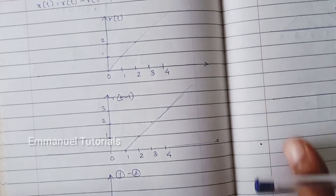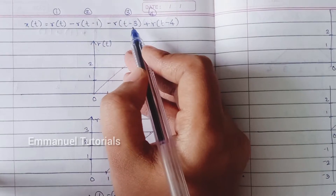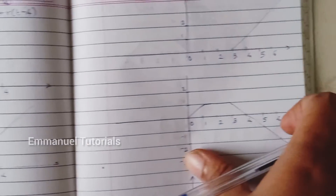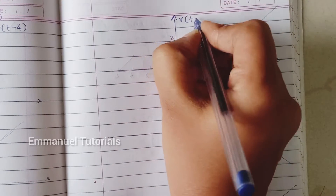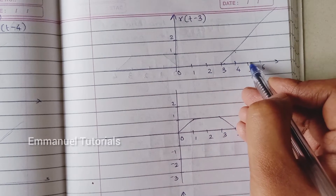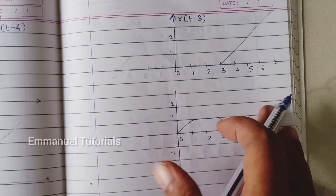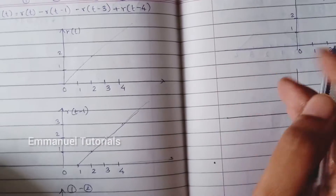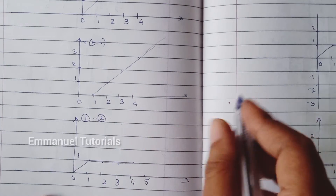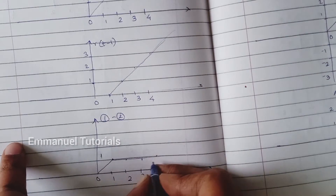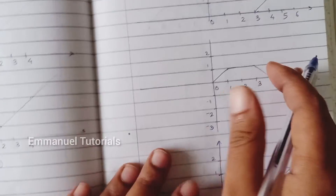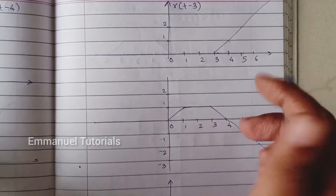Now let's look at the third part: r(t minus 3). This is a delayed version shifted by 3, and r(t minus 4) is delayed by 4. So r(t minus 3) starts at 3 — at t equal to 4 the amplitude is 1, at t equal to 5 it is 2, and so on. Now if we subtract r(t minus 3) from the step signal we obtained, from 3 to infinity the step signal is a unit step and r(t minus 3) is a unit ramp, so their subtraction gives a mirror image of the ramp signal.